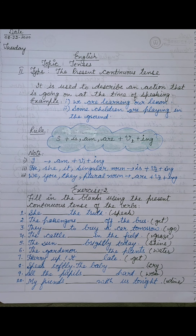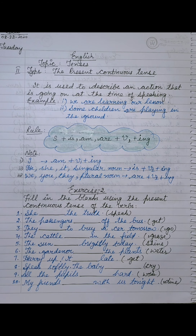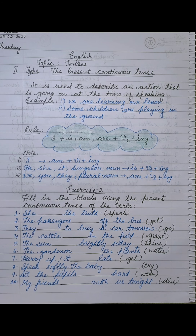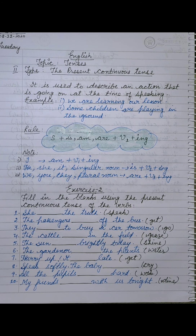In this class we will do only nine tenses, but actually there are twelve tenses total. The three types we will not cover in this class are: present perfect continuous tense, past perfect continuous tense, and future perfect continuous tense. So there are twelve types of tenses, but in this class we will do only nine.